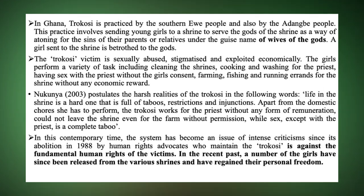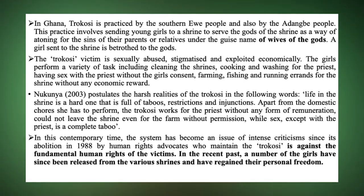Some of these girls are sexually abused, domestically exploited, economically exploited, and go through a lot of difficulties. The Trokosi system is seen as a negative cultural practice and was abolished in 1988 by human rights activists because it infringed on the rights of young girls — their rights to education, their right to choose a husband, and their rights over their own sexuality and reproductive system. Even though abolished since 1988, it continues to prevail in some traditional societies even today.